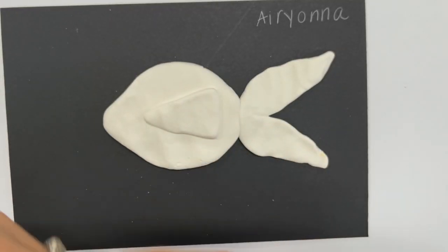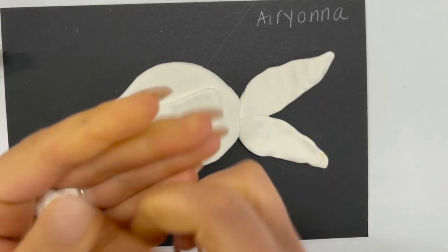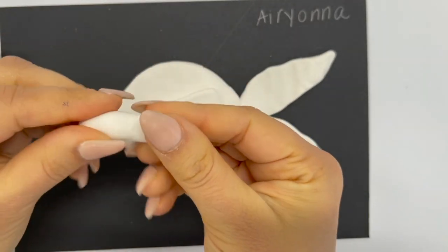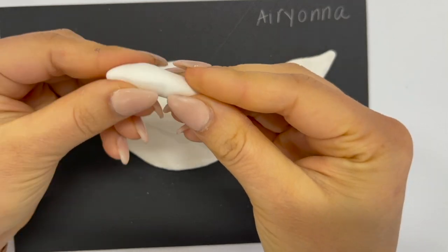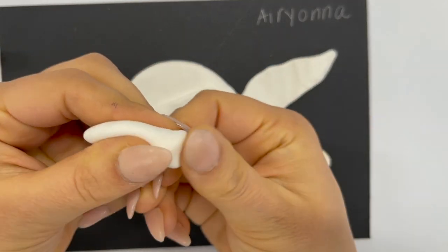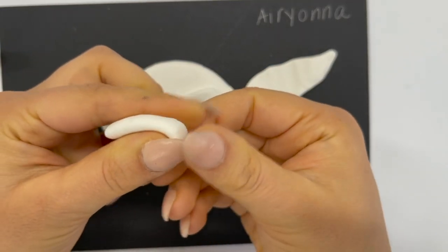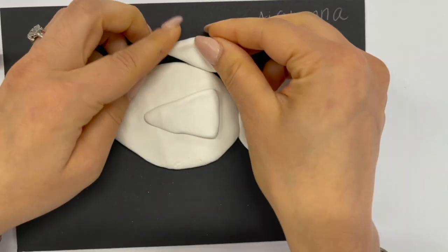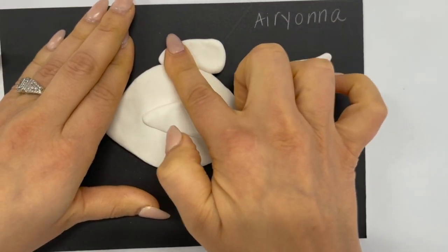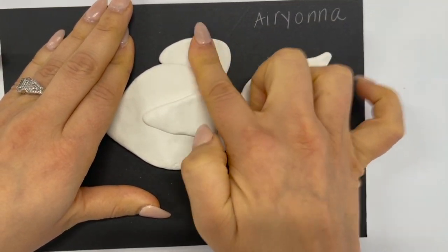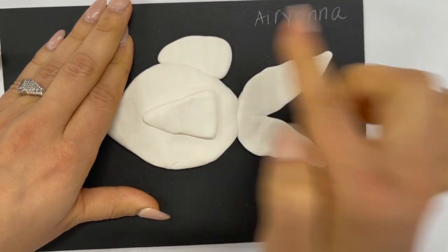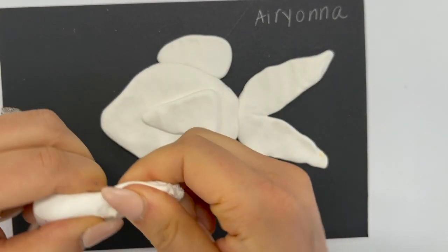Then I'm going to take off another little piece and roll it in my hands, make a little coil. This is going to be the top fin of my fish that goes alongside the back. I'm just going to flatten it out and use my fingers to form it in the shape that I want.